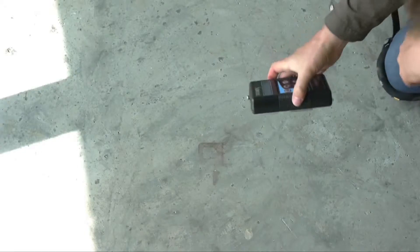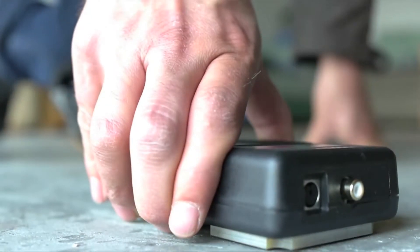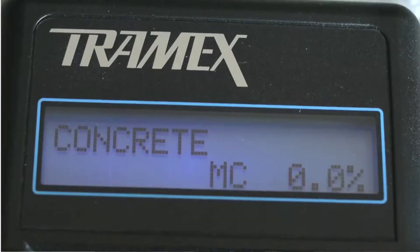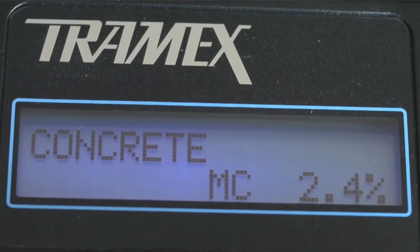Simply turn on the meter, push it onto the surface being tested and read the results on the clear display. The results are calibrated to show percentage moisture content by weight.